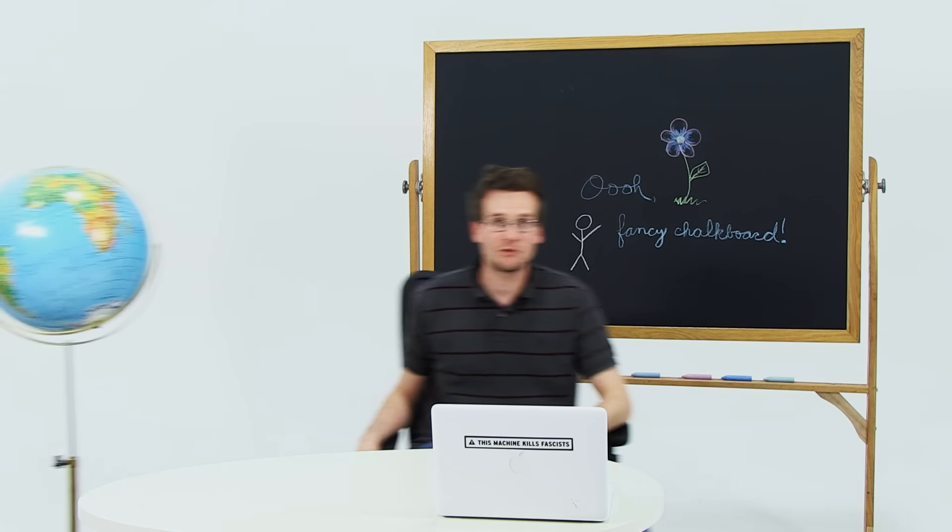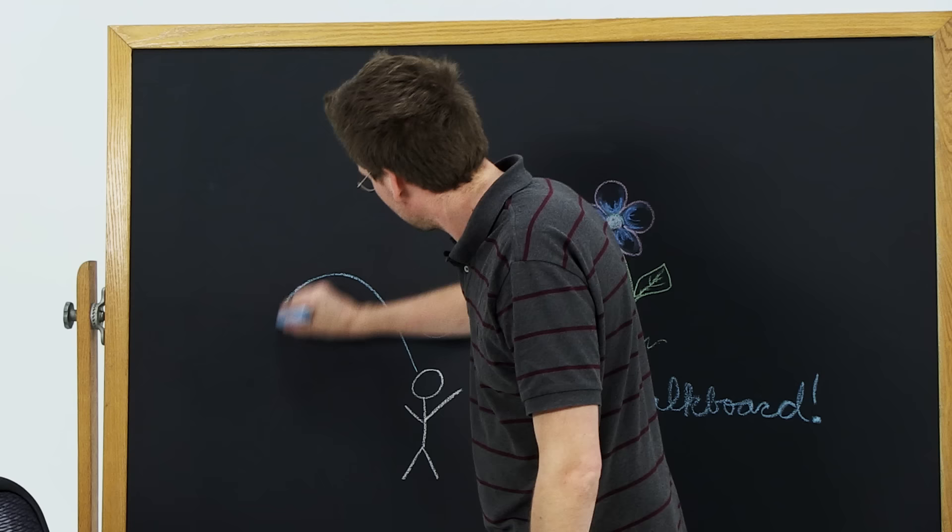Hi, I'm John Green and this is Crash Course World History. Let's begin today with a question. Why am I alive? Also, why don't I have any eyes? Ah, that's better.